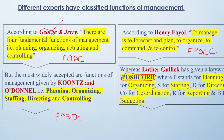Luther Gulick's short form is POSDCORB: planning, organizing, staffing, directing, coordinating, reporting, and budgeting. These are the functions given as per the authors and experts. Questions might come from this — these are also important.